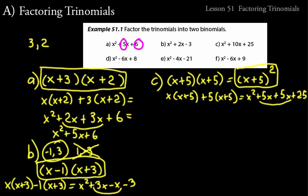Practice problem D: x² - 6x + 8. Think of two numbers that multiply to +8 and add to -6. Options include 8 × 1 or 4 × 2, but we need -6, so we use -4 and -2: (-4)(-2) = 8 and -4 + (-2) = -6. The answer is (x - 4)(x - 2).